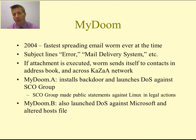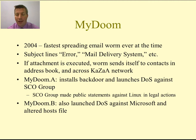The first attack I'll go through is MyDoom, from 2004. At the time it was considered the fastest-spreading email worm ever. The subject lines were very generic — things like 'error' or 'mail delivery system' — with an attachment. If the attachment was executed, the worm sent itself to contacts in the address book. If Kazaa, a popular peer-to-peer sharing software, was installed on the computer, it was also shared across that network, so it spread very quickly through both peer-to-peer and email.